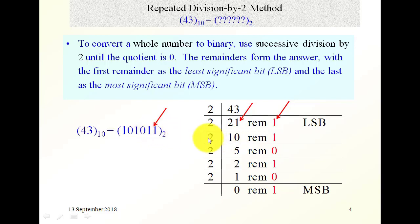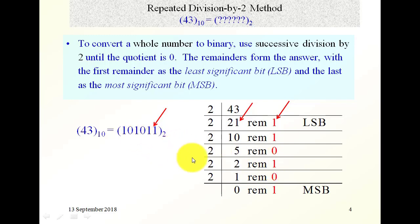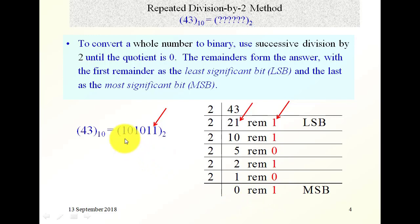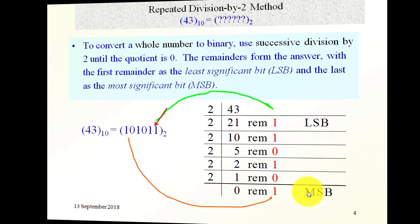We divide 10 by 2, which is 5, and the remainder is 0. This 0 goes here. Then we divide 5 by 2, which is 2, and the remainder is 1 — this 1 goes here. 2 divided by 2 is 1, and the remainder is 0, which goes here. This is the least significant bit of the new number, and this is the most significant bit of the new number.